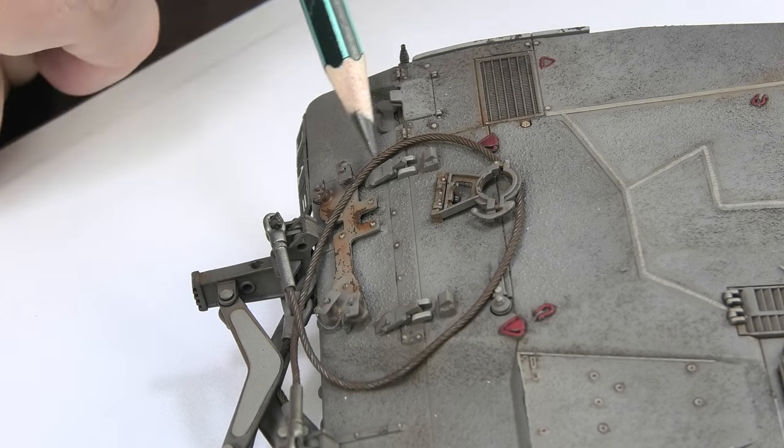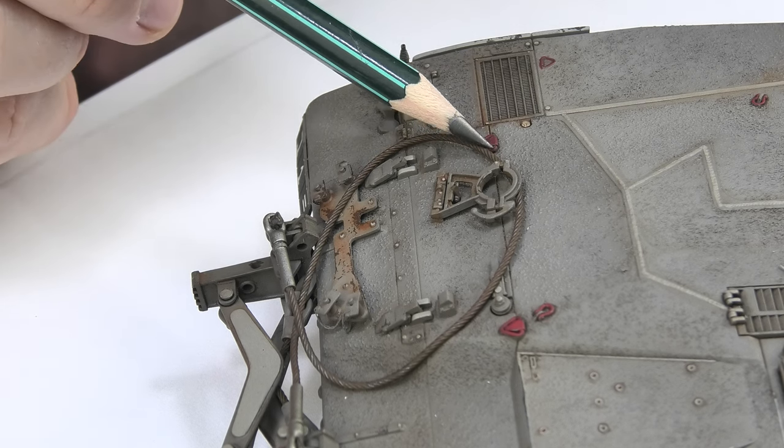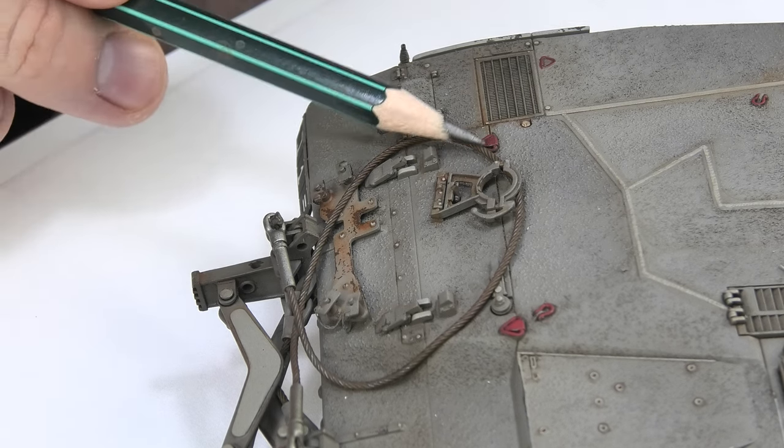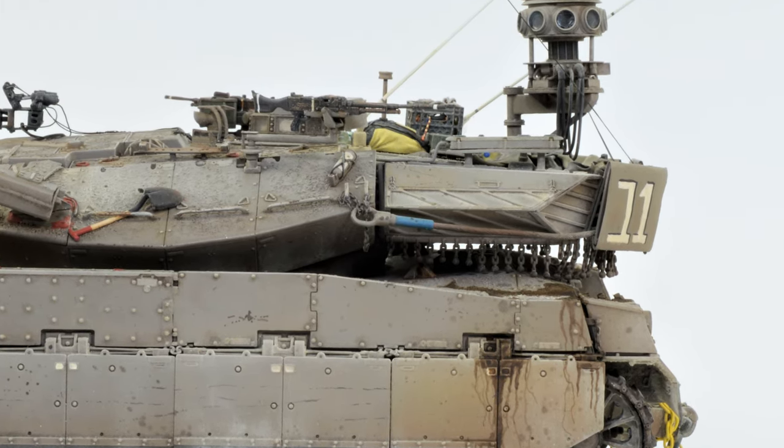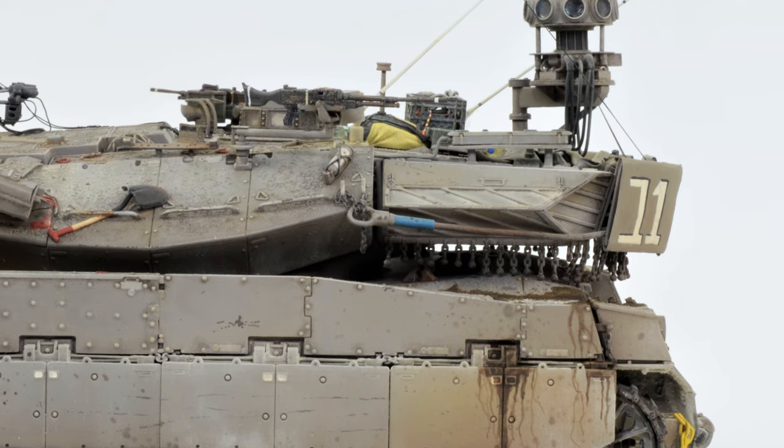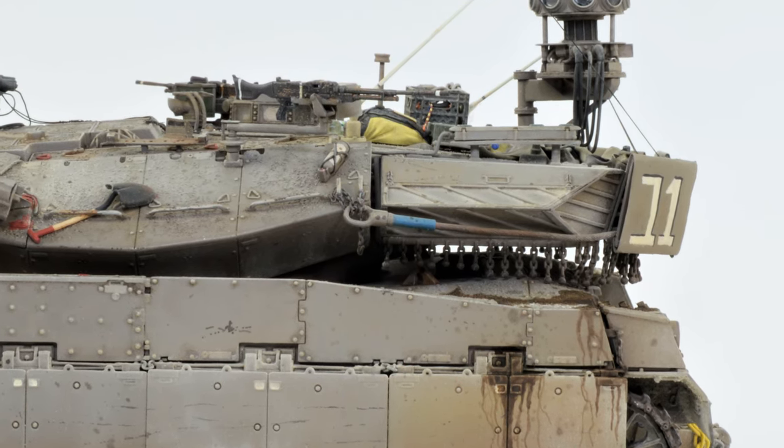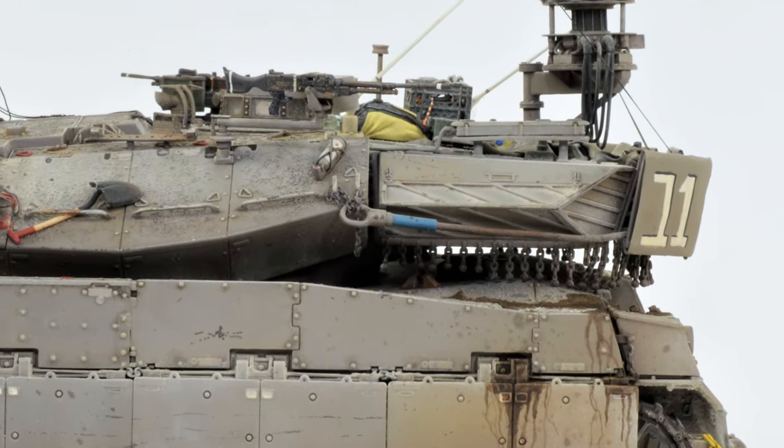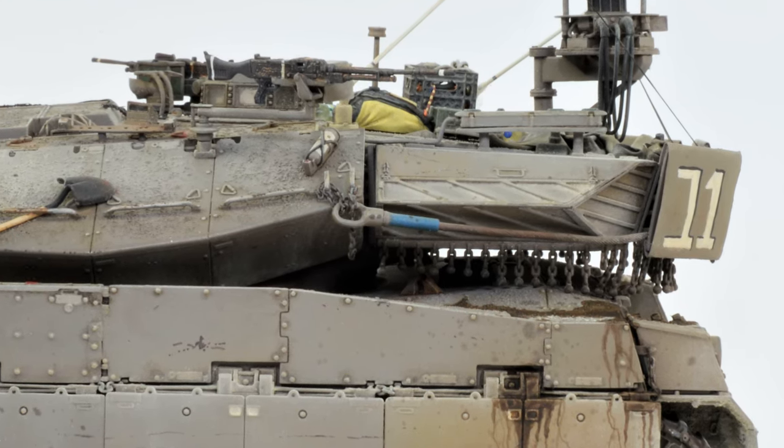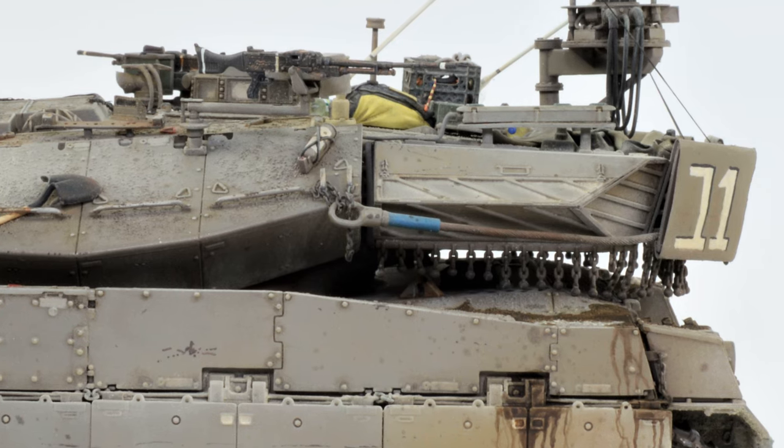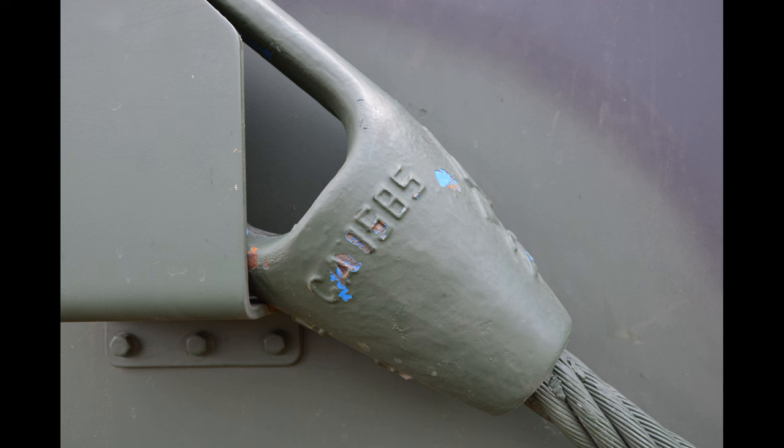And one more thing worth paying attention to. It's on the example of the Merkava that I can show that the ropes can sometimes be painted in completely non-military colors. Here's an example of blue markings. There may also be other colors which is worth checking. This may turn out to be an interesting accents on the model. If we are talking about blue check the color here.